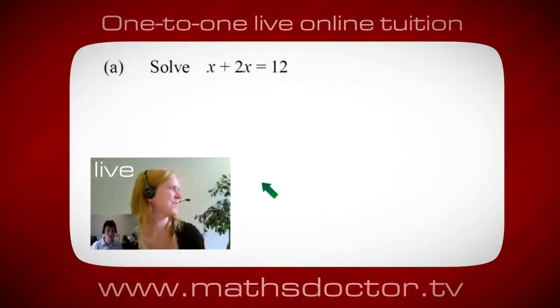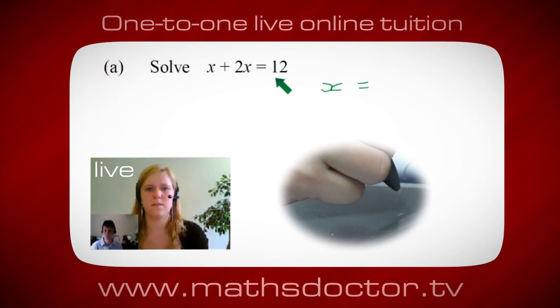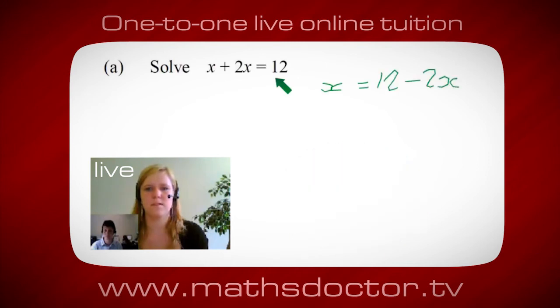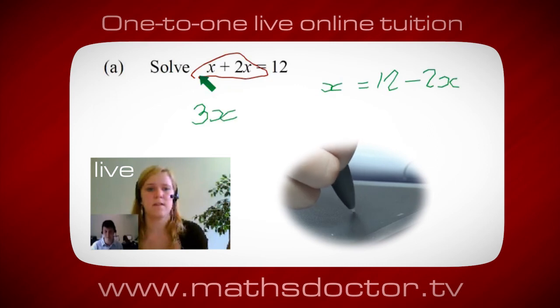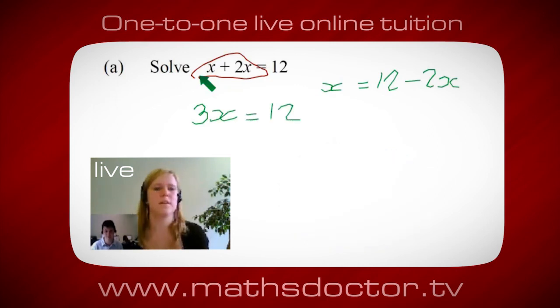Okay Mary, so let's look at this one. Solve x plus 2x equals twelve. What we want to do first is get all of these x's together. So can you see anything we can do to get all these together in one place? It's 3x, isn't it? Yes, 3x equals 12, so x equals 4. Brilliant, spot on, well done.